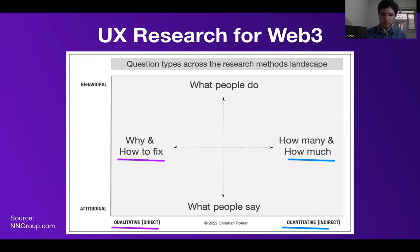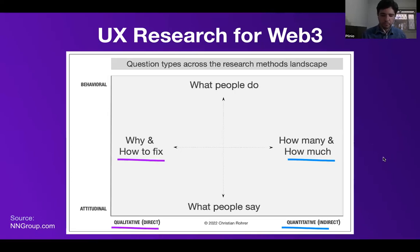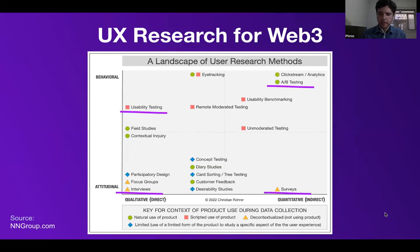In simple words, qualitative methods are much better suited for answering questions about why or how to fix a problem, whereas quantitative methods do a much better job answering how many and how much types of questions. Attitudinal research is usually used to understand or measure people's stated beliefs, but is limited by what people are aware of and what they are actually feeling comfortable to share. While behavioral research seeks to get insights into what people do with the product in question. Here we have a landscape of user research methods — there are plenty of them, each best suited to a different context and used in accordance with the type of data you want to capture.